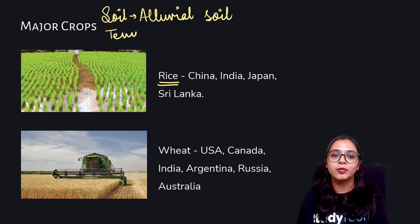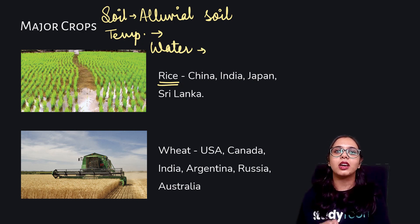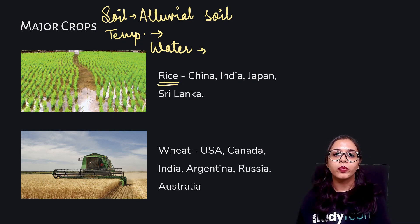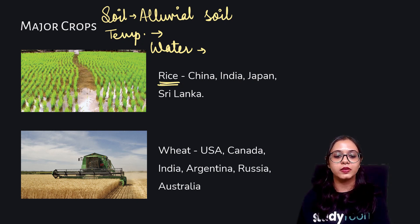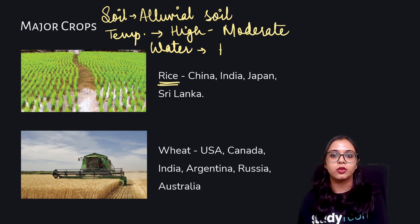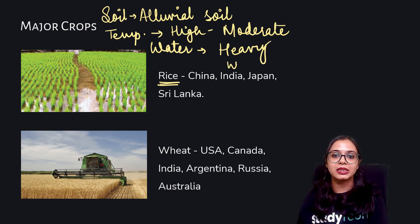The next condition is temperature. The amount of water this crop needs — whether it needs high or low amounts — I'll be relating it to rainfall. So heavy rainfall, low rainfall, and humidity can also be understood in the context of water. The kind of soil that rice needs is alluvial soil. The temperature should be high to moderate, and it needs heavy rainfall, so the need for water is plenty.